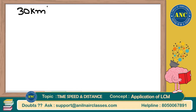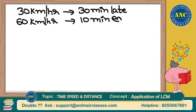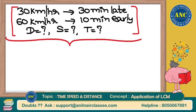We solved the first question yesterday: 30 kilometers per hour, 30 minutes late; 60 kilometers per hour, 10 minutes early. Yesterday we discussed only the distance. Today we will also find the actual speed and the actual time. We will do this problem after some time. I am just reminding you where we stopped yesterday and what we found out.